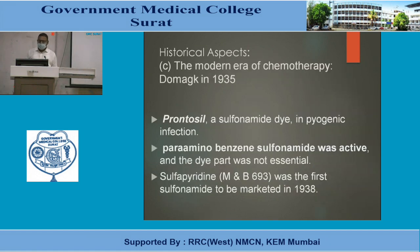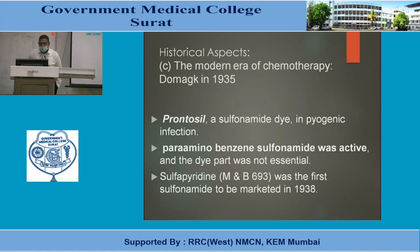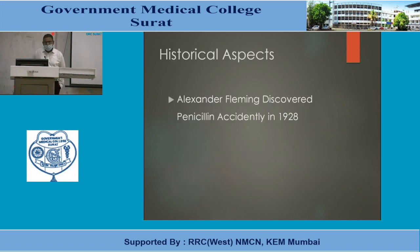The modern era of chemotherapy began with Domagk in 1935. Prontosil, a sulfonamide dye, was found effective in pyogenic infection. Further analysis showed the dye portion was not important — the active portion was the para-amino benzene sulfonamide moiety. The dye portion was removed, and sulfapyridine became the first sulfonamide marketed in 1938.